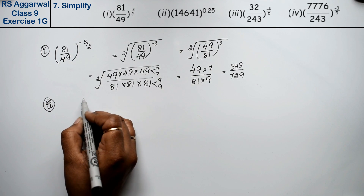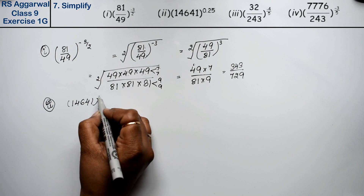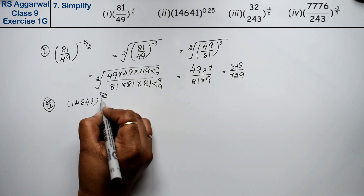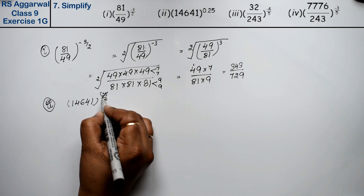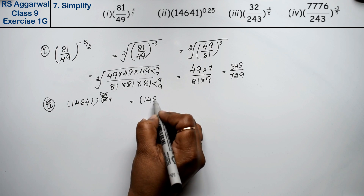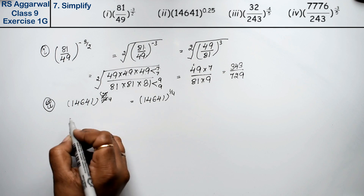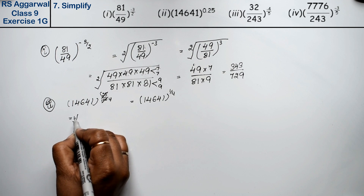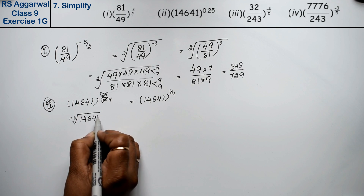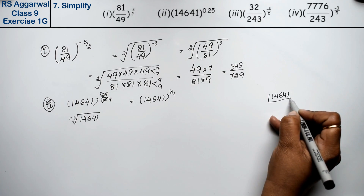Let's do the second part. Second part is 14641 to the power 1 upon 4. We can say that 4-4 pairs will come out. Let's find the factors of 14641.